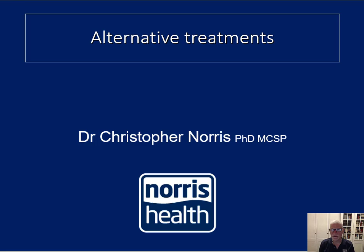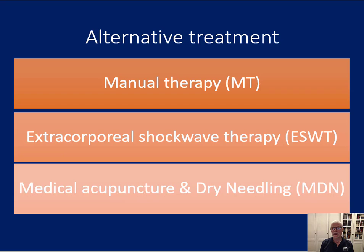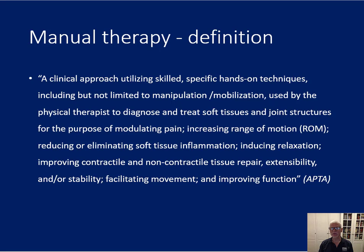In this lecture we're going to look at alternative or adjunctive treatments to the normal treatments used in sport therapy. We're going to cover three: manual therapy, shockwave therapy, and dry needling. Let's start off with manual therapy. We need a definition of what we understand by manual therapy. This is a definition by the American Physical Therapy Association, the APTA.